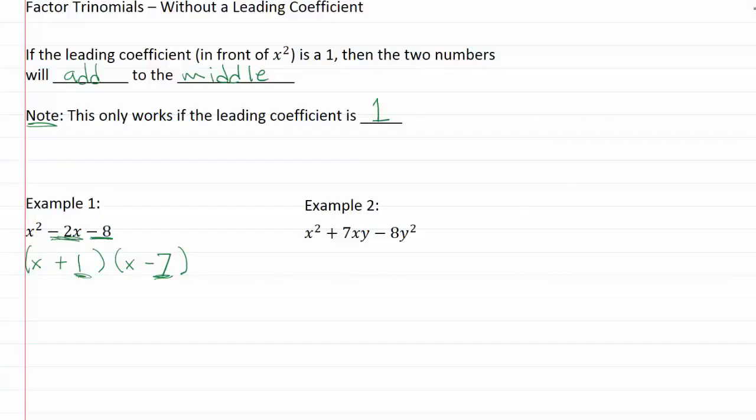So in this case we want these two numbers to add to the middle. So we've got a negative two x right here, and it looks like this one and the negative seven are not going to add to give me this negative two. So even without going through and doing my FOIL I'm getting an idea that that might not be what I want.